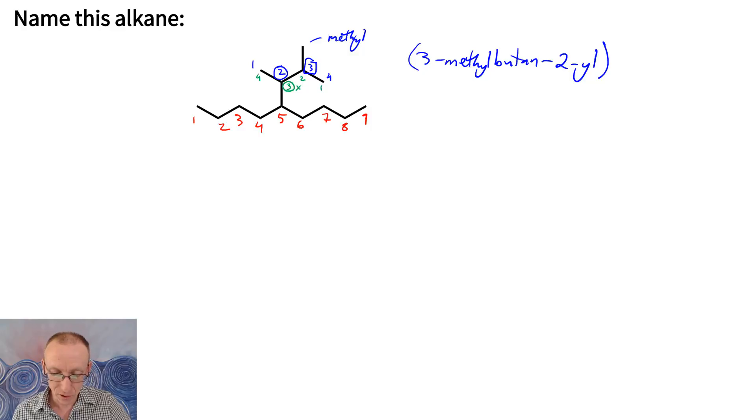Okay, so let's go back to our system. We want to now look at the parent chain and have we numbered this so that we get the lowest possible number for where that substituent is attached to the parent chain.